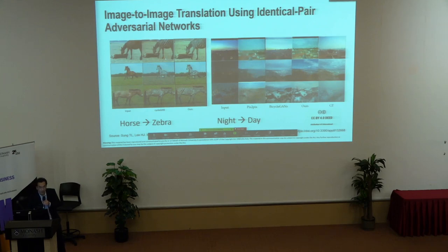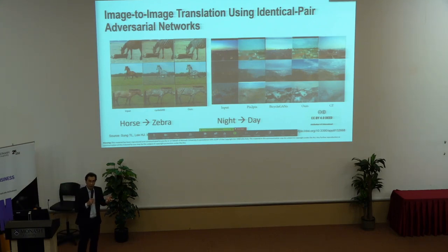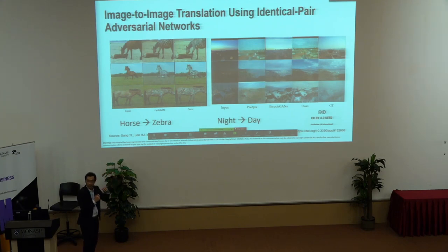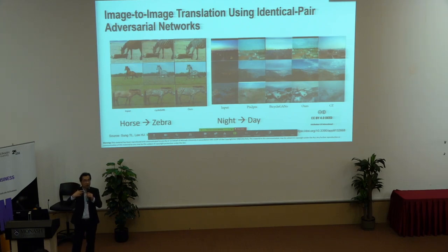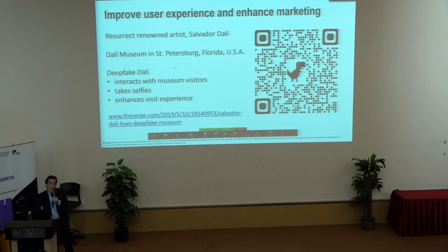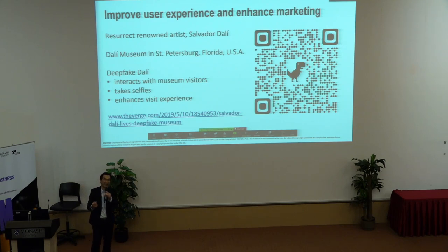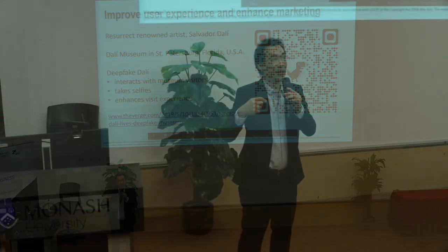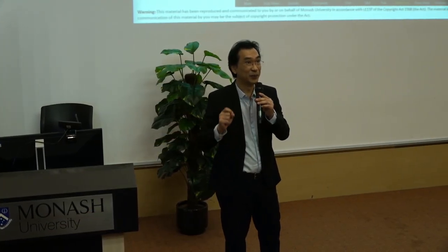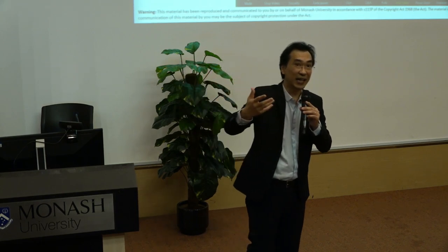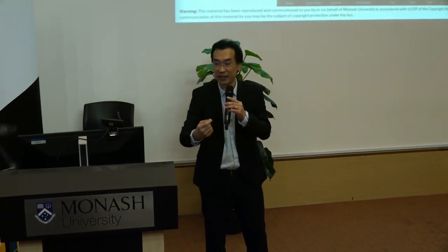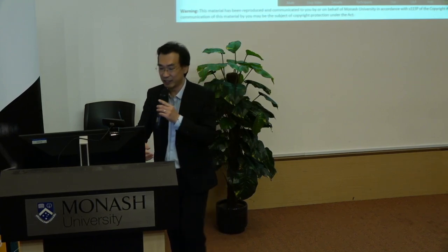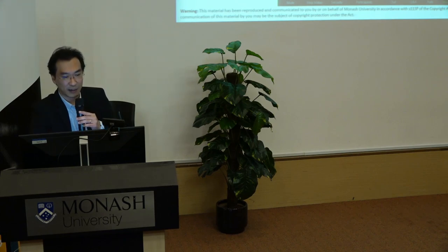There are a lot of positive uses when it comes to this kind of technology. For example, you can change a horse to a zebra using an existing photograph. All companies have used it to improve user experience and enhance marketing. For example, if you go to the Dali Museum in St. Petersburg, Florida, you can visit the museum where they have resurrected the renowned artist Salvador Dali. In the image, Dali seems to come back to life — he can take photos with you, interact with all the visitors, and enhance the visit experience. People and visitors find a lot of joy and fun interacting with a deepfake Salvador Dali.